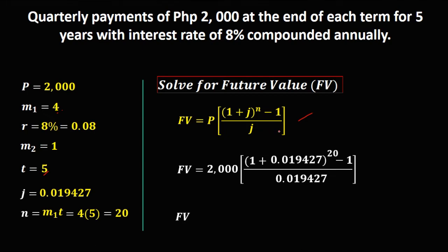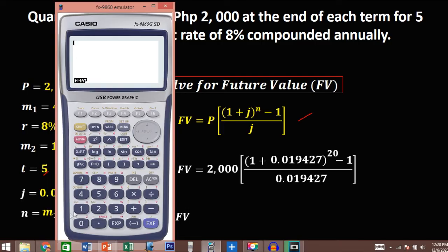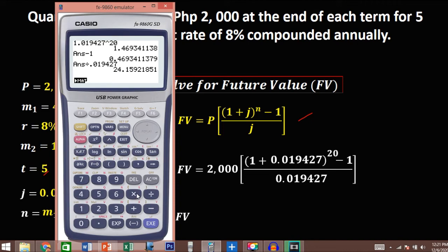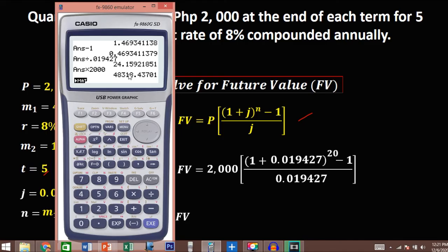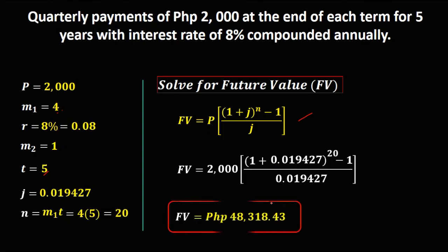Using the calculator: 1.019427 to the power 20, equals, then minus 1, equals, then divide by 0.019427, equals, then times 2,000. The future value is 48,318.43 or 48,318.44.